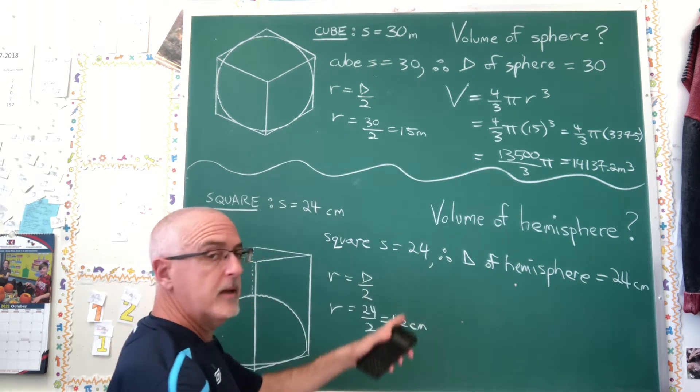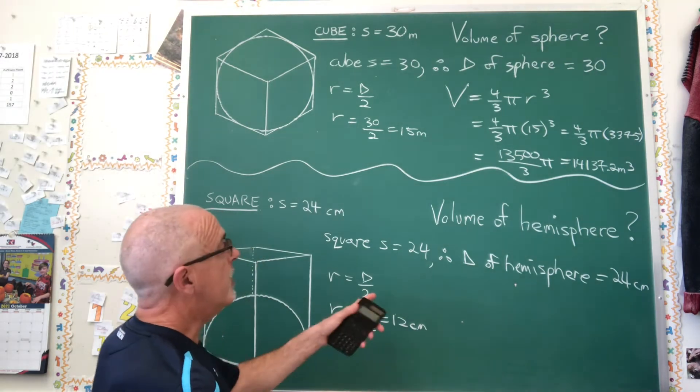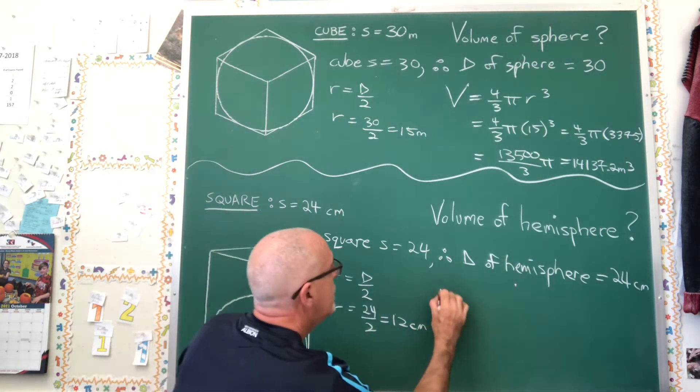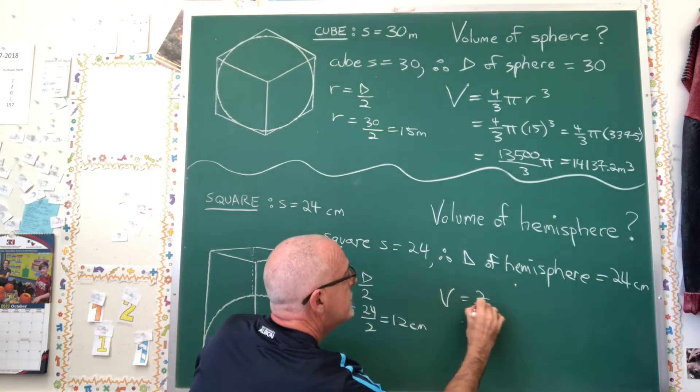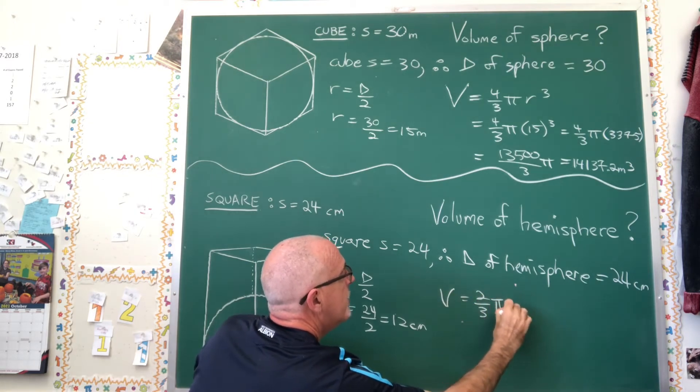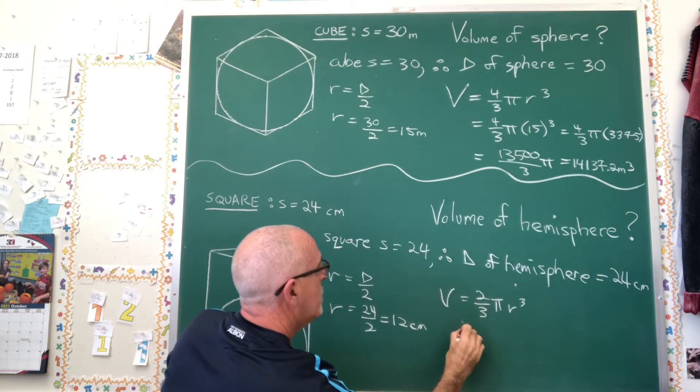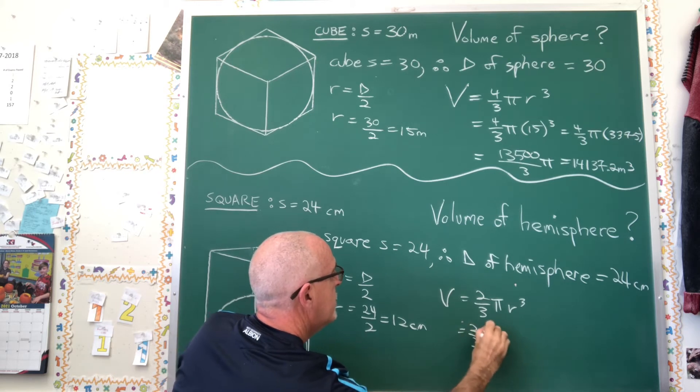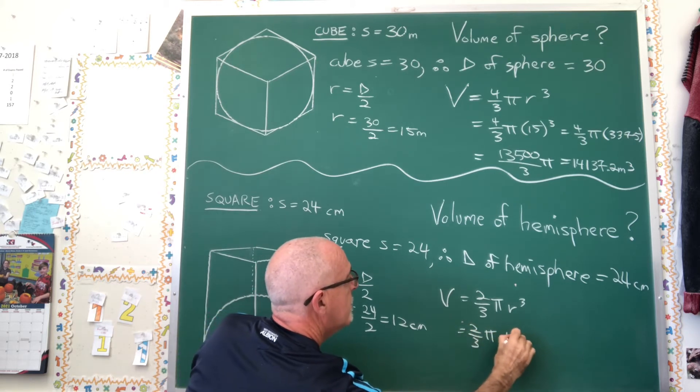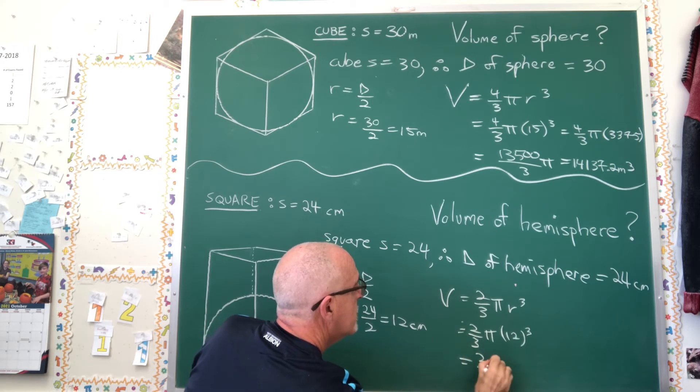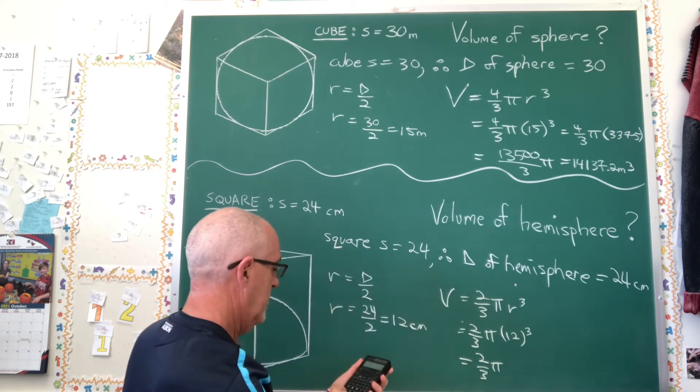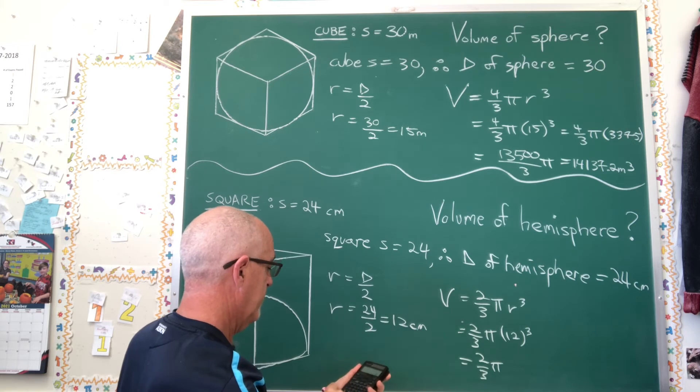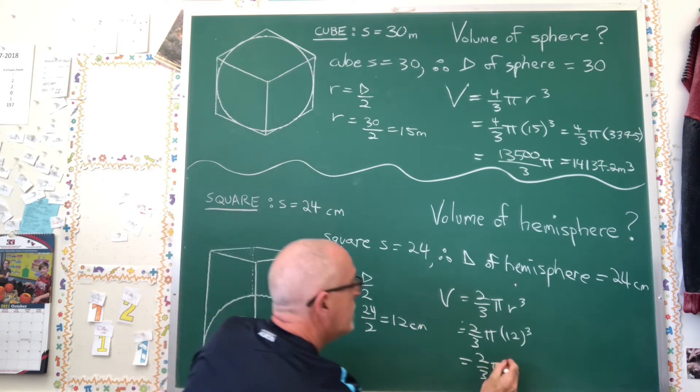I'm going to go directly into the more efficient volume of a hemisphere formula, which is 2/3 πr³. So I have 2/3 π times 12 cubed, which is 2/3 π times 1,728.